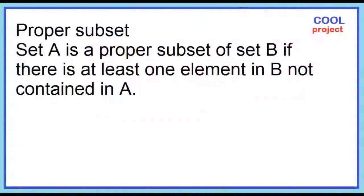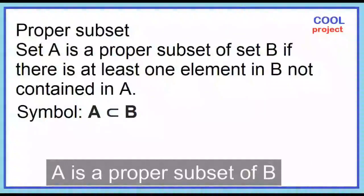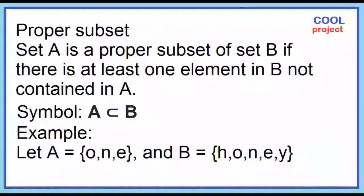Proper subset. Set A is a proper subset of set B if there is at least one element in B not contained in A. In symbol, A is a proper subset of B. Example: Let A be the set of letters in the word 'one' and B be the set of letters in the word 'honey.' Set A is a proper subset of B. The elements of set A are also found in set B, and set B has more elements than set A.